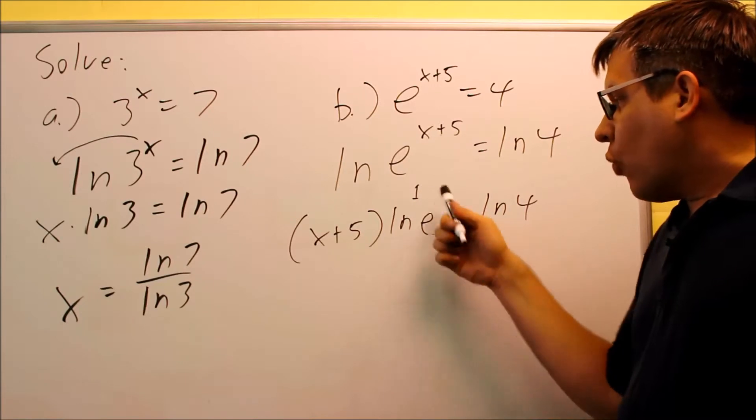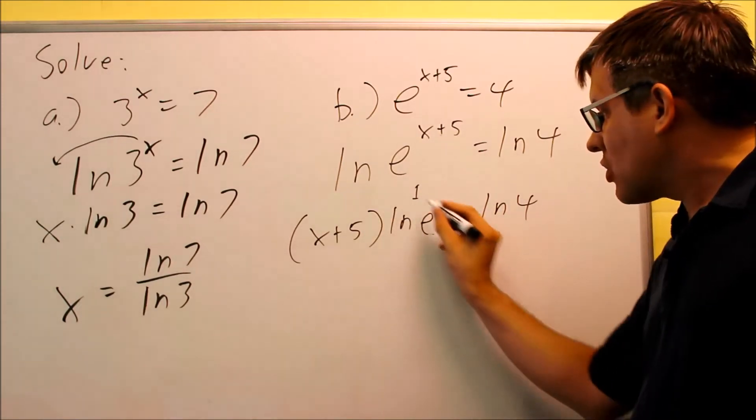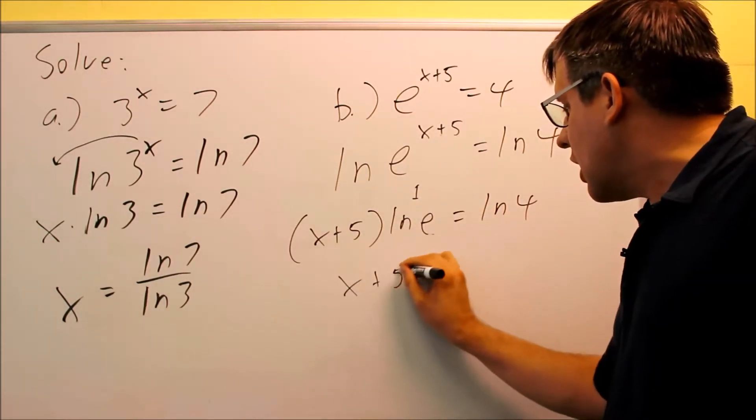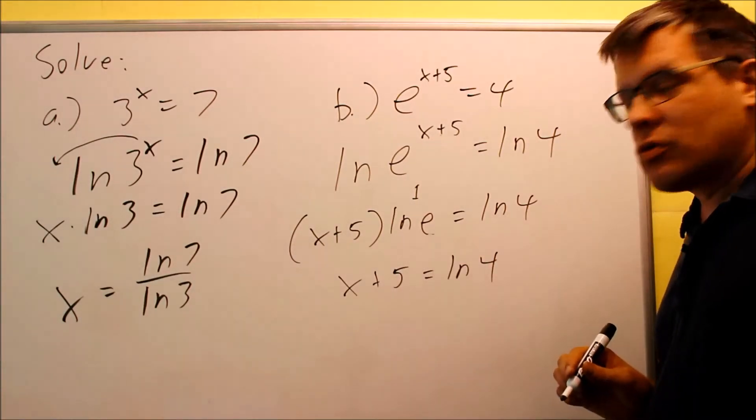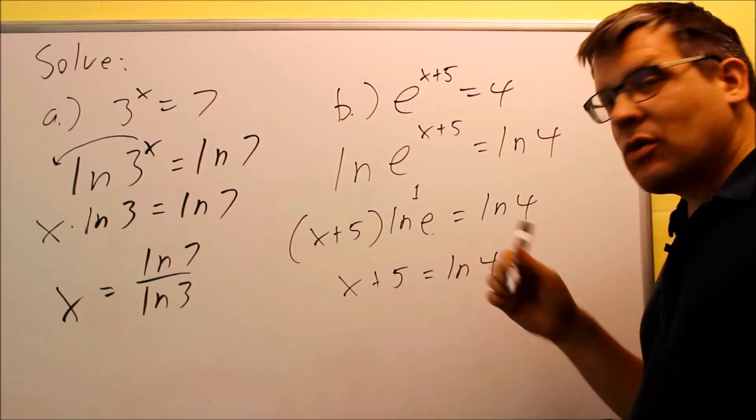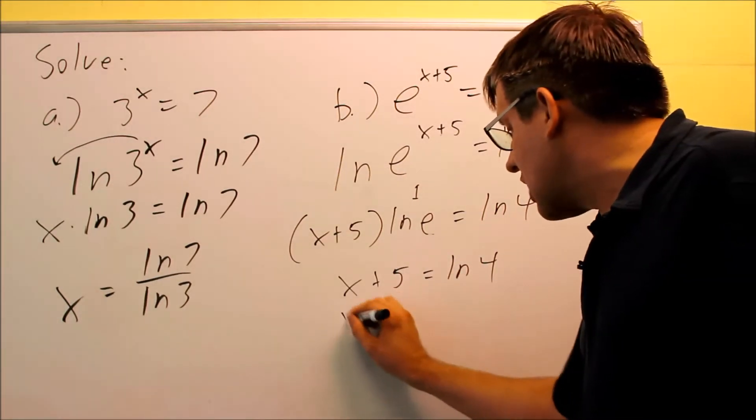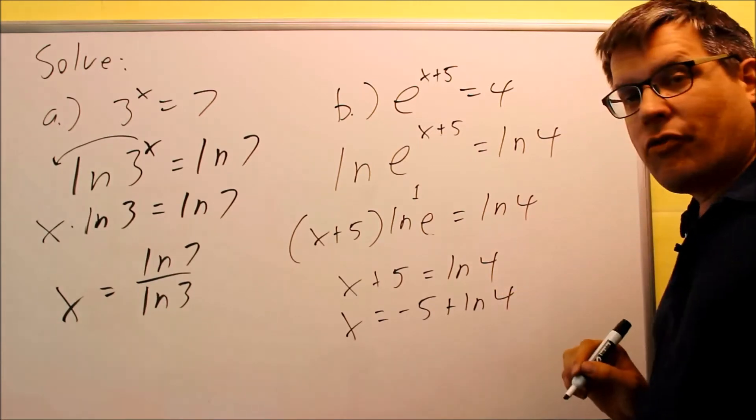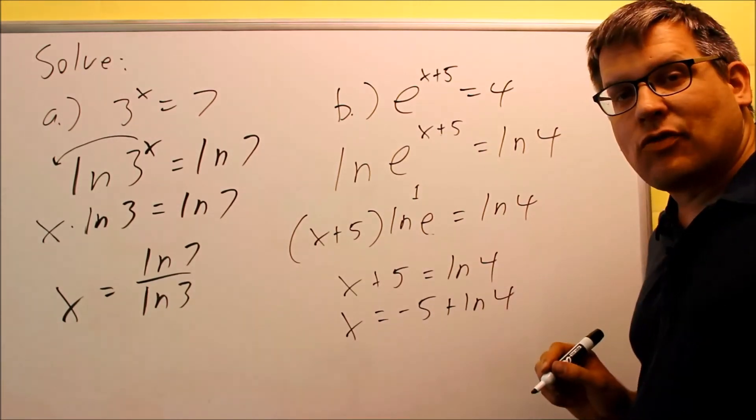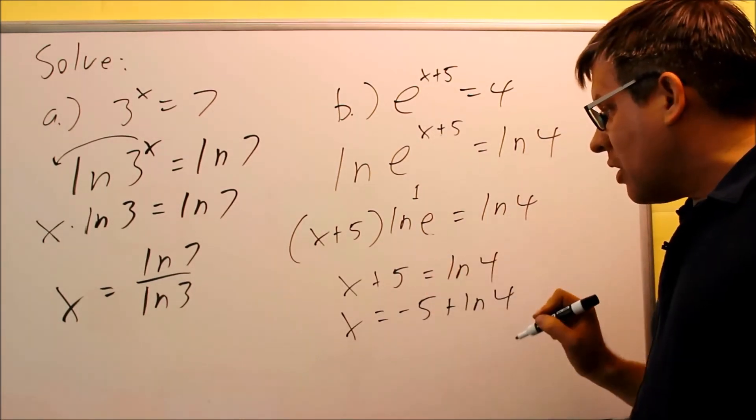So you would have 1 times x plus 5. This part is going to just disappear because it's equal to 1. So now I just have x plus 5 equals ln 4. Last thing we do is subtract 5 from both sides, and we get negative 5 plus ln 4, or if the order is switched around, that's fine as well. This would be the exact answer.